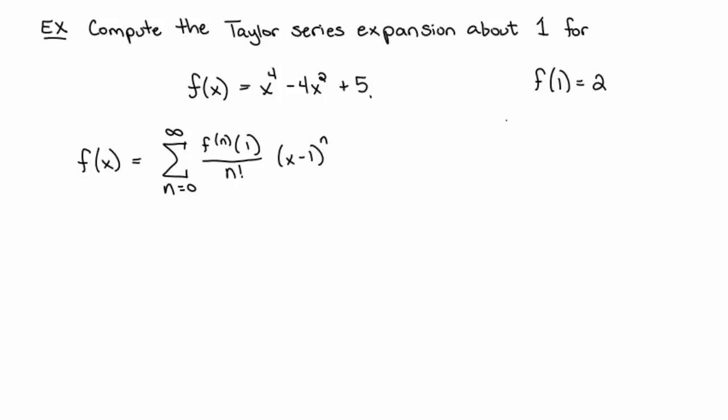And then you also need obviously the derivatives, so let's go ahead and find out what the first derivative is. It's four x cubed minus eight x, and so f prime at one is going to be negative four.